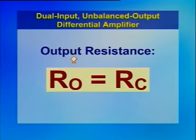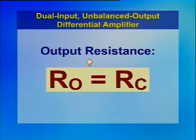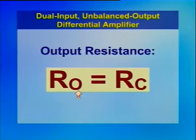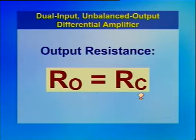The output resistance is defined as the equivalent resistance present at each output terminal. From the AC analysis equivalent circuit, we get R01 equal to R02 equal to RC. Since output is taken only from the collector of transistor Q2, the output resistance is considered as R02 equal to R0. Therefore, R0, the output resistance, equals RC, which is the collector resistance of the circuit.